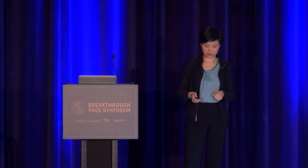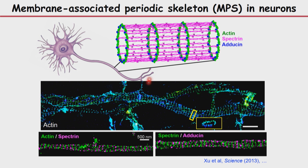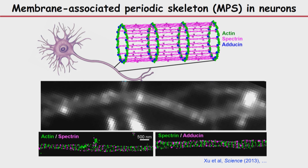I want to show you why this structure was missed before. This is a three-dimensional image — as you turn around, the stripes show you the rings that are periodically spaced, connected by the pink spectrin molecules. Why were they not seen before? If you just do diffraction-limited imaging, the distance or spacing between the rings is below the diffraction limit, so you completely miss it.